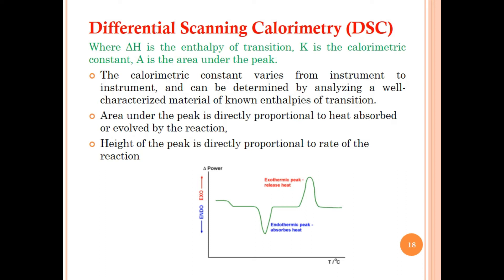The calorimetric constant varies from instrument to instrument and can be determined by analyzing a well-characterized material with a known enthalpy of transition. The area under the peak is directly proportional to the heat absorbed or evolved by the reaction, and the height of the peak is directly proportional to the rate of reaction. As discussed in DTA, the DSC curve also has maxima and minima: minima represent endothermic peaks and maxima represent exothermic peaks.